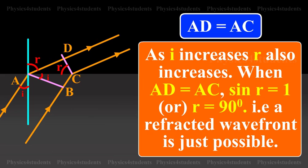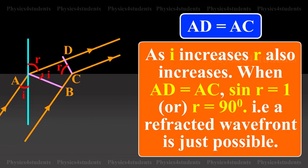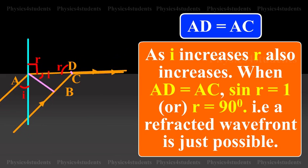AD is equal to AC. As i increases, r also increases. When AD is equal to AC, sin r is equal to 1 or r is equal to 90 degrees. That is a refracted wavefront is just possible.